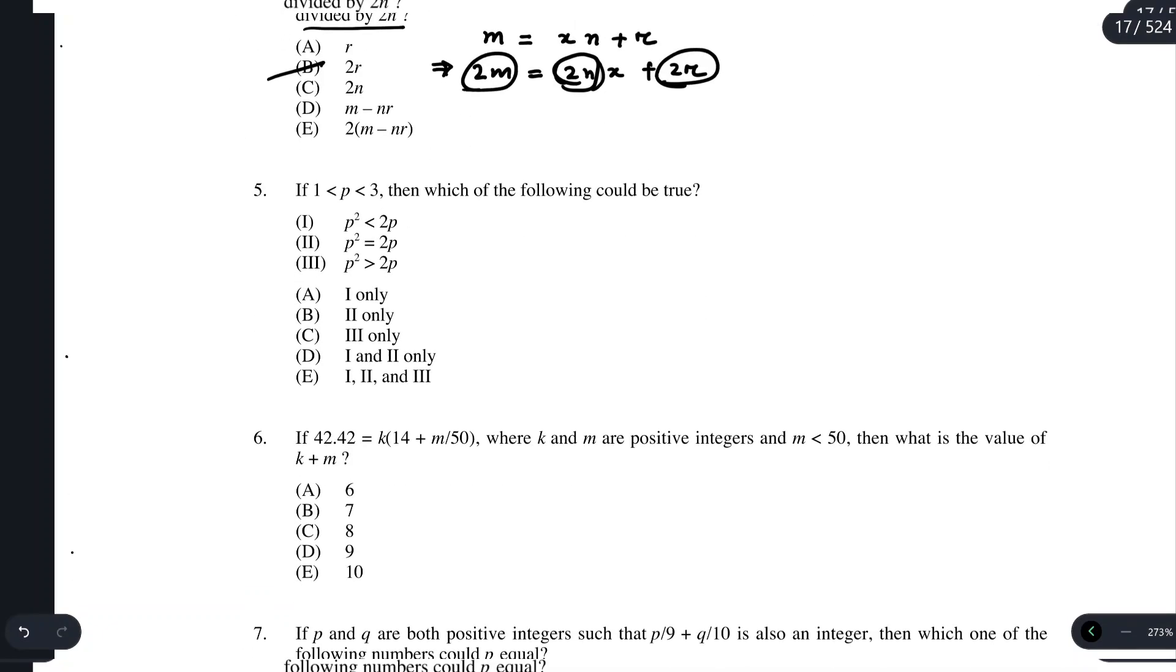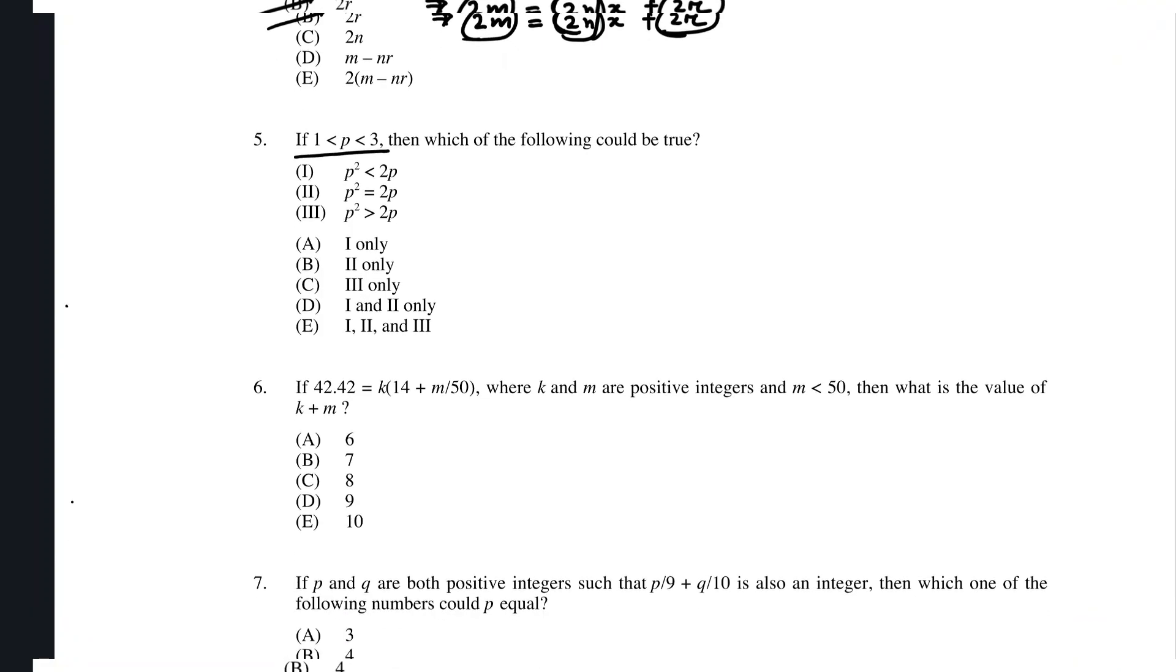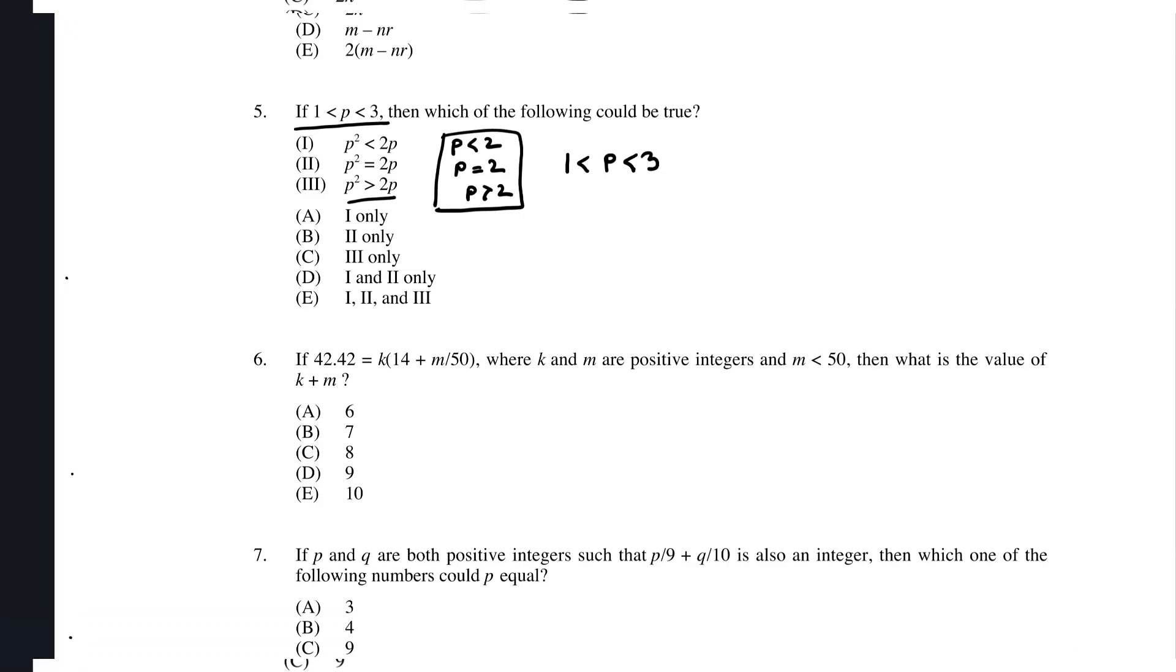Now, if we look at problem number 5, we are given that the value of q is greater than 1 and less than 3. From the first option here, we have q squared is less than 2 or q is less than 2. For the second part, we have q equals 2. For the third part, we have q is greater than 2. All these three values we have here satisfy the equation we are given. So all of these three possible options can be true. The answer for problem number 5 should be e.